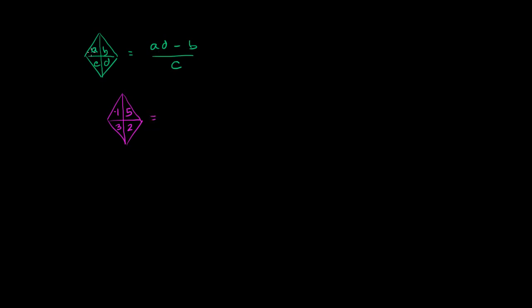And we would say, OK, every time we see an a, that is going to be negative 1. So we have a negative 1 times d. Well, d is whatever's in the bottom right section of this diamond or this kite. So d is going to be 2. This is a, this is b, this is c, and this is d.